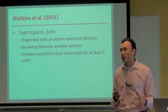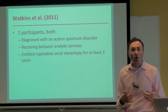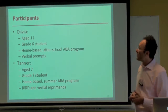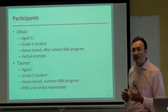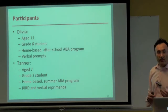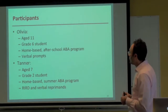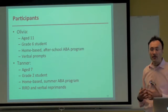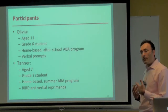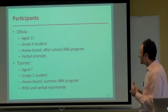Olivia was aged 11 at the start of the study, a grade 6 student participating in a home-based after-school ABA program for which I was her consultant. We had previously used verbal prompts without success. Tanner was aged 7, enrolled in grade 2, participating in a home-based summer ABA program. Previously, RIRD — response interruption and redirection — had been tried and failed, as did verbal reprimand. So two previous punishment procedures had no effect on Tanner's stereotypy.